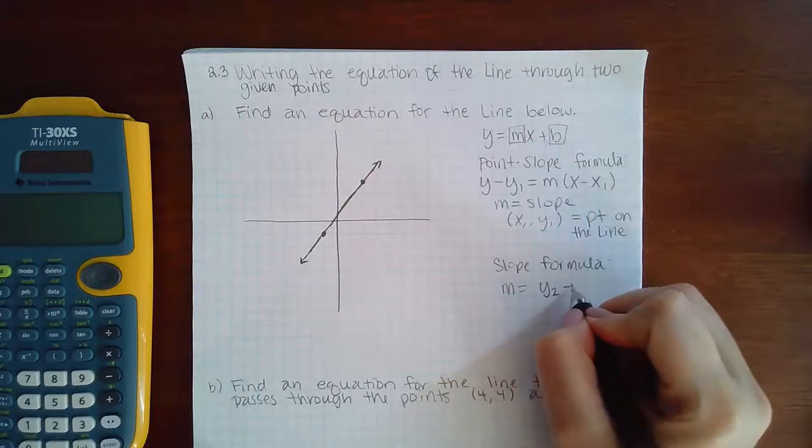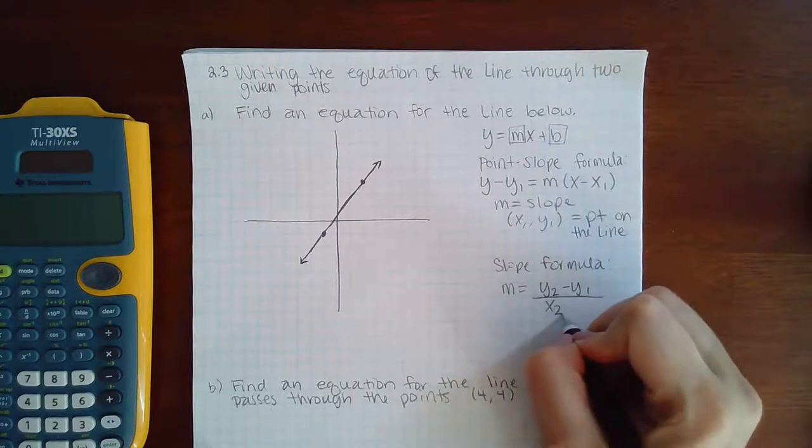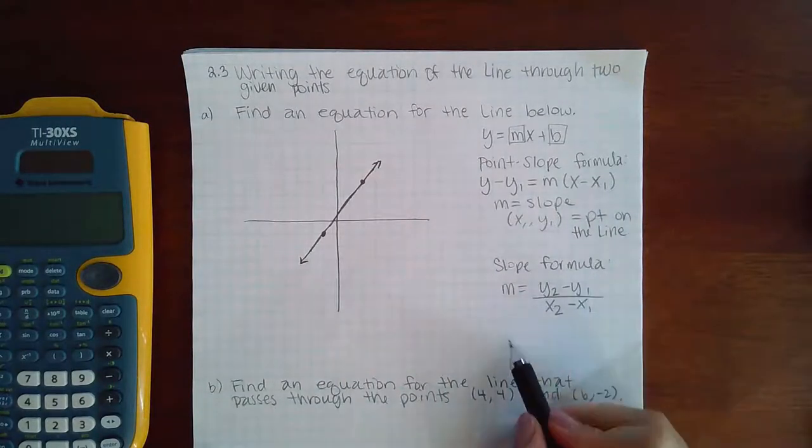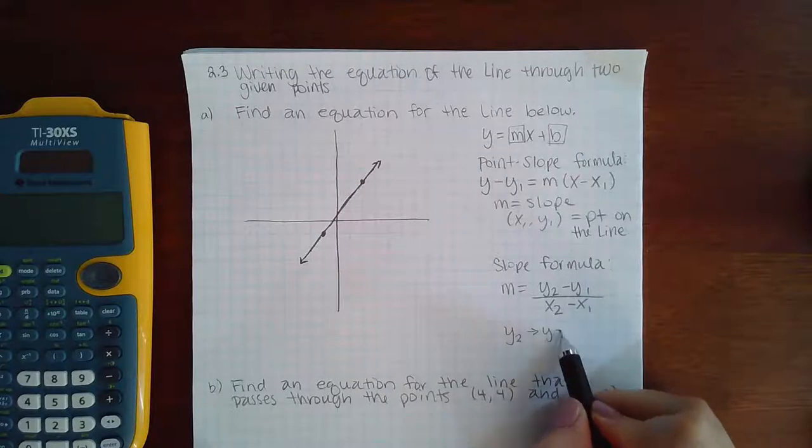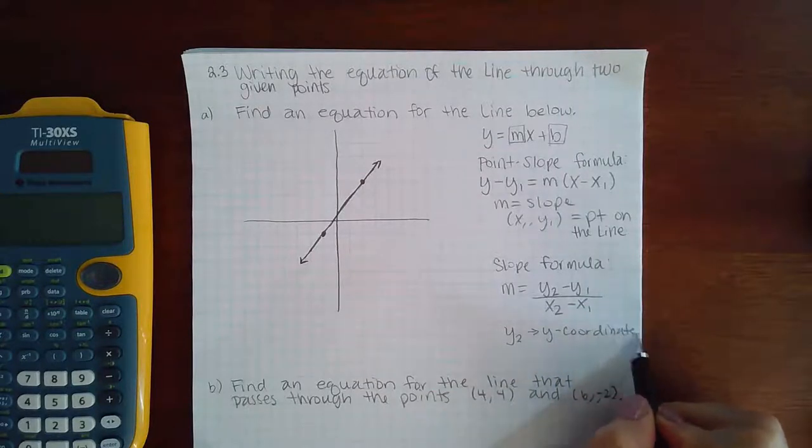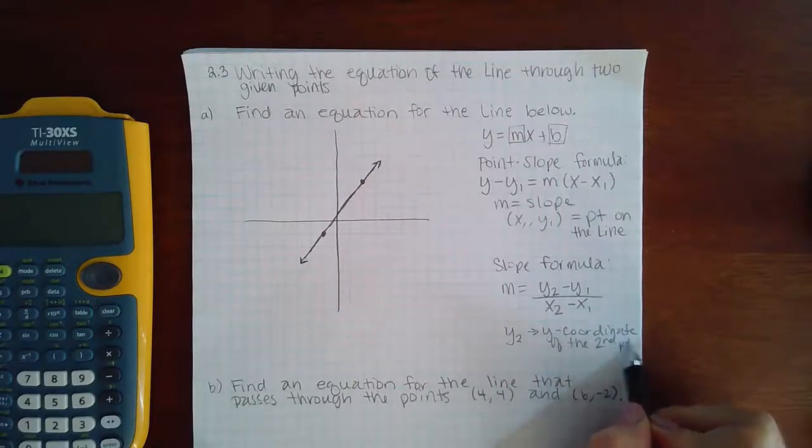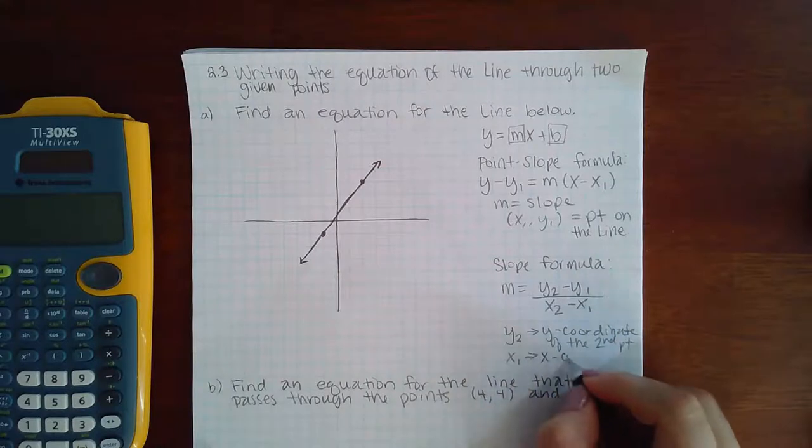The slope formula is actually m equals y2 minus y1 over x2 minus x1. And what this means, if I see something like this, it means the y-coordinate of the second point.